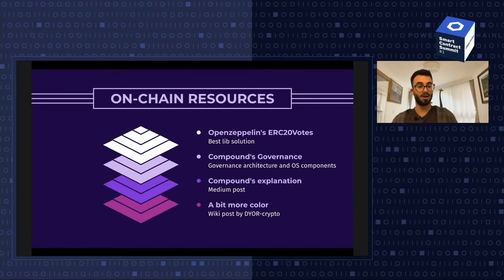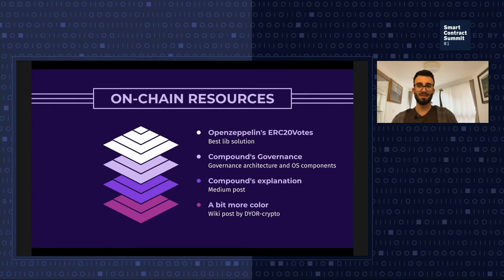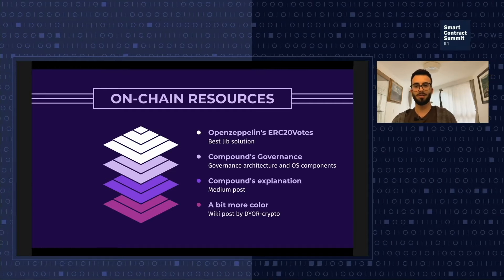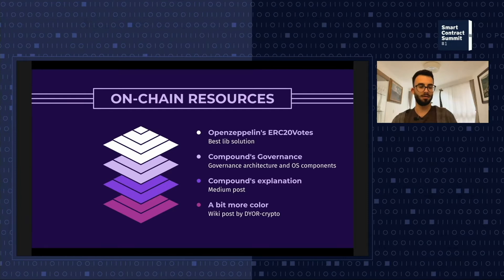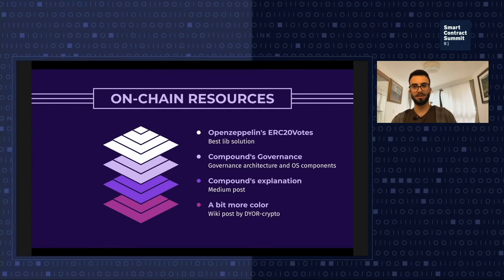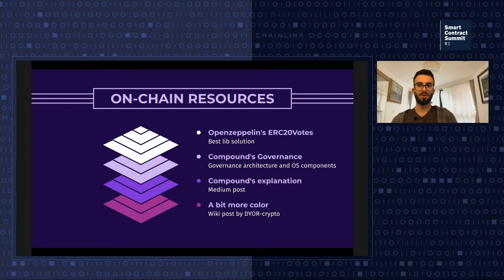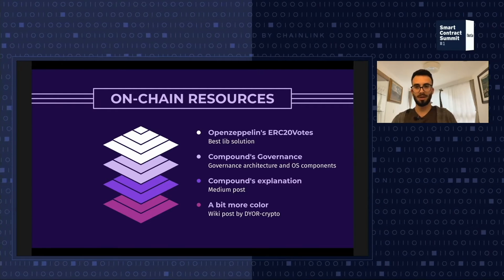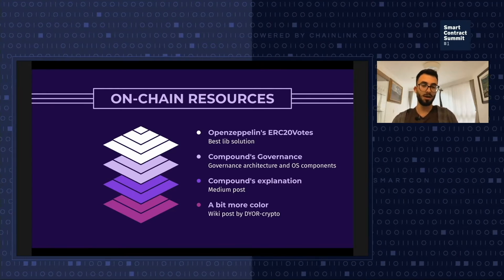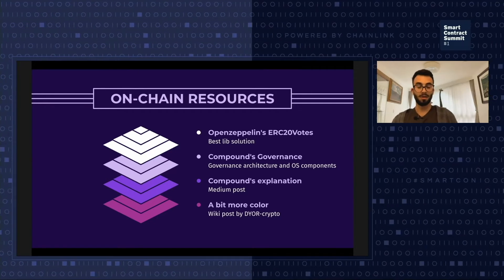Some good on-chain resources: first is ERC20Votes, the library from OpenZeppelin — released recently, based on Compound governance, and practically plug-and-play. You can take the library and customize it as you wish. We've used it at Jigstack and I totally approve it. I've also linked the Compound governance docs, which are very detailed but more developer-oriented. There's also a Medium post from the Compound team explaining their governance in a high-level, friendly manner, plus a wiki post with more details and perspectives from people like Vitalik on on-chain governance.